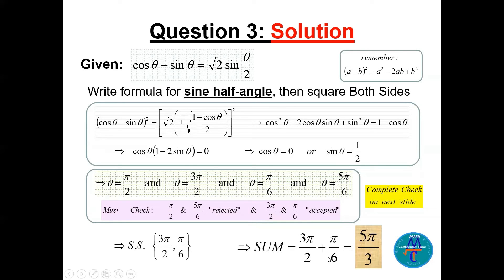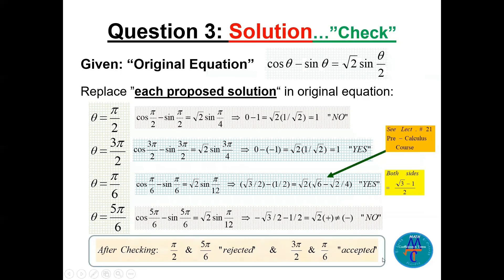The solution set consists of the accepted values: pi/6 and 3pi/2. Adding them: 3pi/2 plus pi/6, with LCD of 6 gives 9pi/6 plus pi/6 equals 10pi/6, which simplifies to 5pi/3. The checking of each proposed solution — pi/2, 3pi/2, pi/6, and 5pi/6 — in the original equation is detailed on the next slide, confirming which are rejected and which are accepted.